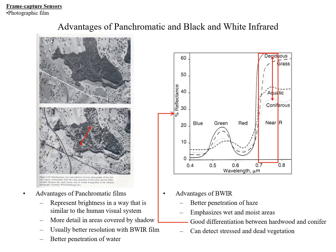We've seen these two photos before. At the top is a panchromatic image; at the bottom is a black and white infrared image. The advantages of panchromatic film are that it represents brightness in a way similar to the human visual system, there's more detail in areas covered by shadow, it usually has better spatial resolution than black and white infrared film, and there's better penetration of water. The advantage of black and white infrared is better penetration of haze, and it emphasizes wet and moist areas, making it useful for mapping wetlands.